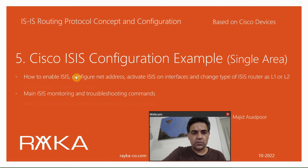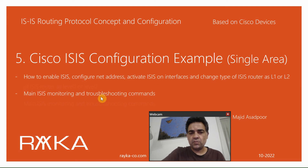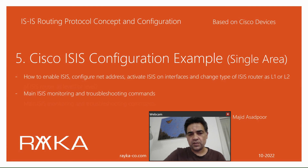In this section we will learn, through a single area topology, how to enable ISIS routing protocol, how to configure a NET address, activate ISIS on the interfaces, and change the type of ISIS router to level 1 or level 2. We will also see the main ISIS monitoring and troubleshooting commands, including the neighbor table, topology table, and database table.